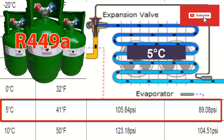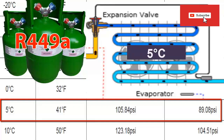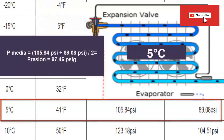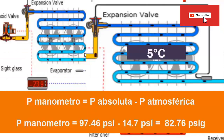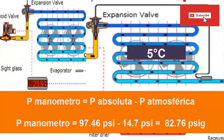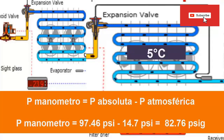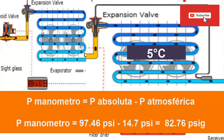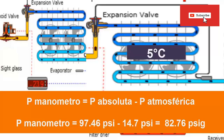For example, by taking the average between these values, you have an absolute pressure value of 97.46 psi. By subtracting the atmospheric pressure, you have an average working pressure of approximately 82.76 psi G. Although it is not exact, we can say that with an evaporator pressure of 82.76 psi G, we would be very close to reaching the temperature of 5 degrees in the middle of the evaporator.